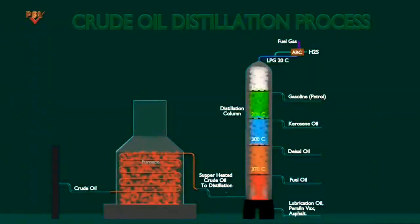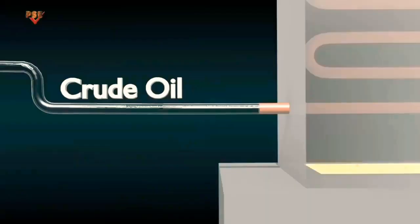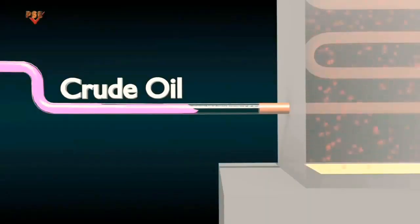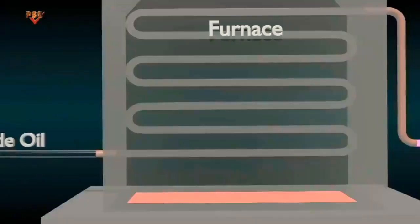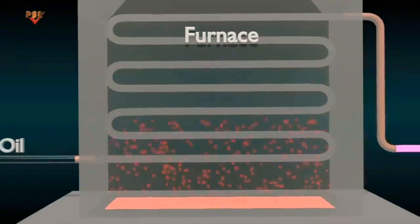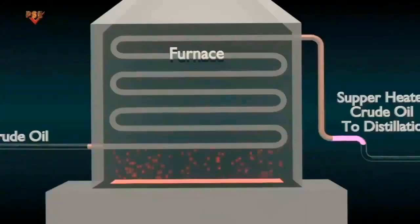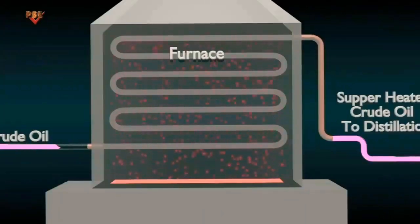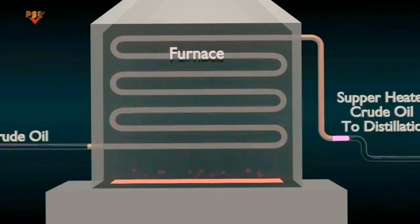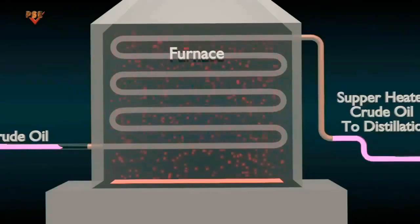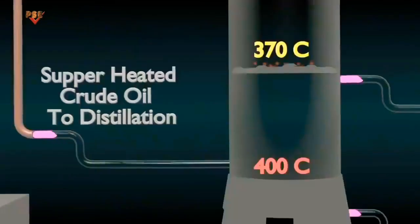In this distillation process, crude oil is supplied to a furnace before the distillation tower, where it is heated and vaporized to become the crude oil mixture. The vapor and liquid mixture is then fed into the bottom section of the tower.